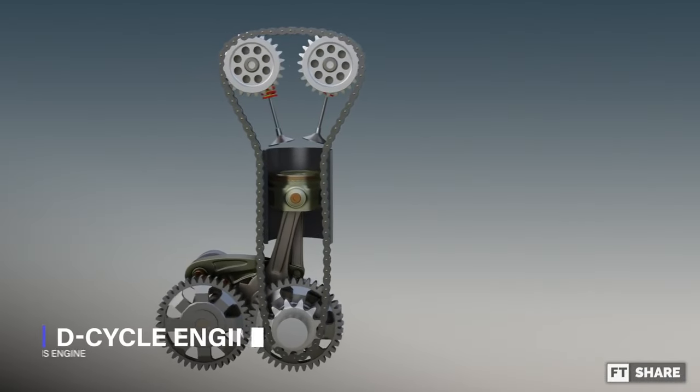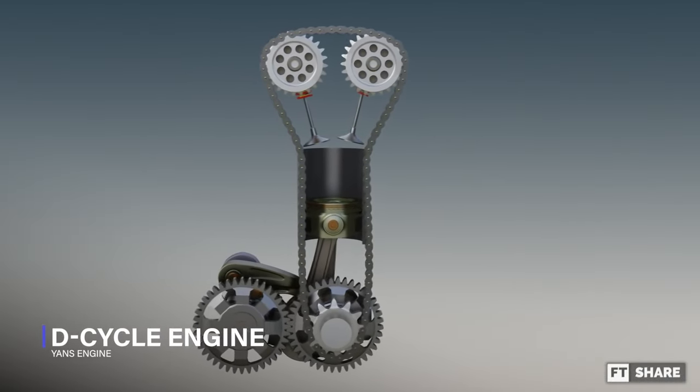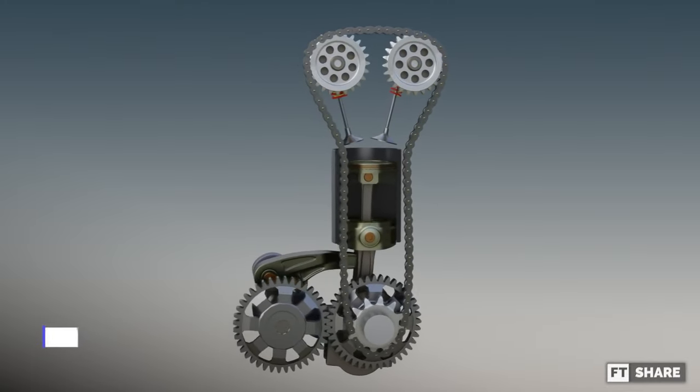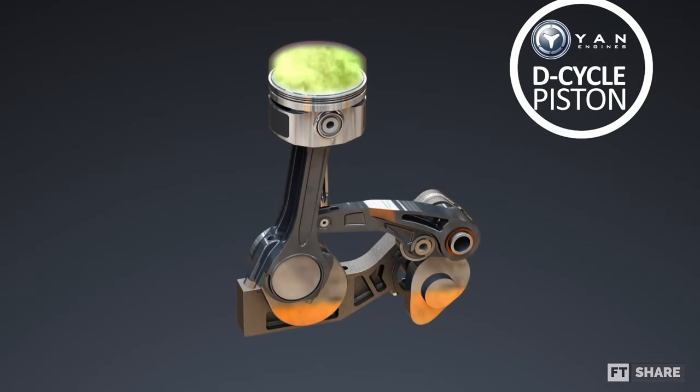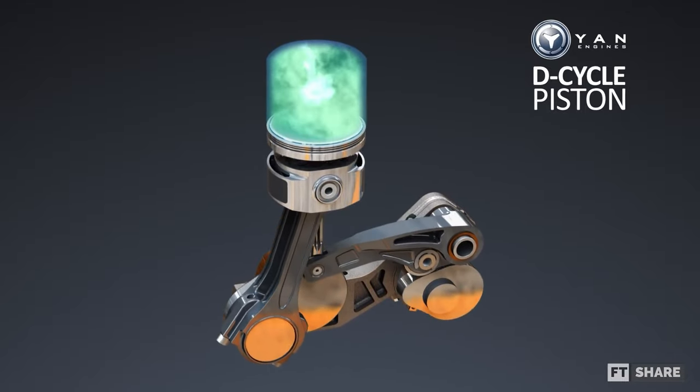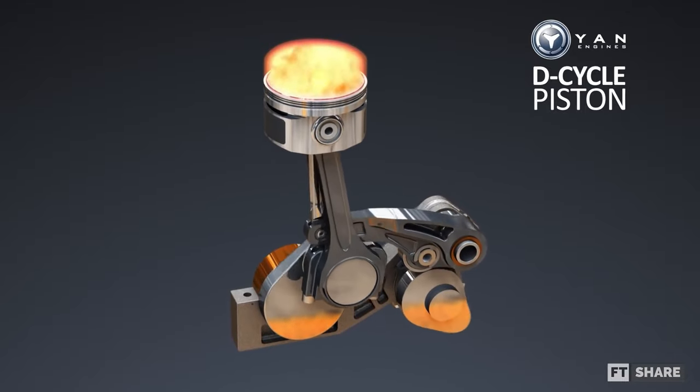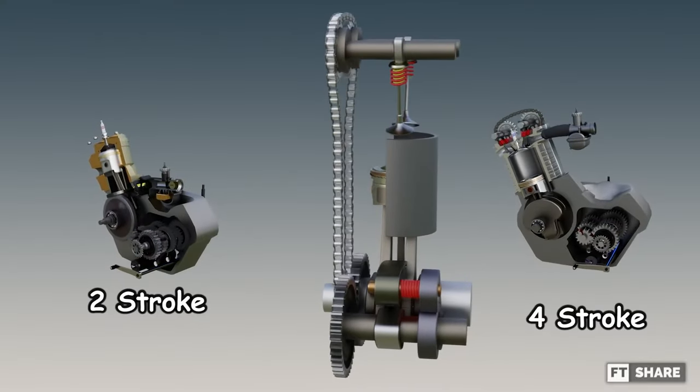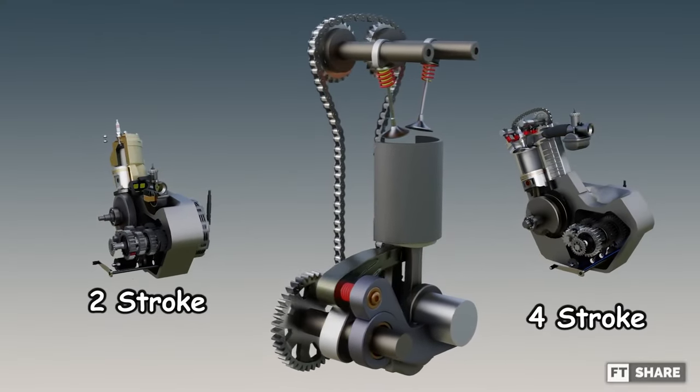Now, this question is what made the engineers think hard and finally gave birth to the concept of the D-cycle engine, to be precise, from the company Yen's engine. But this is like the name, it's just a concept, and hasn't been realized until now. Namely, a 4-stroke engine combined with a 2-stroke engine mechanism.